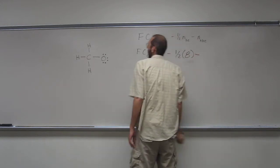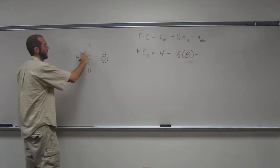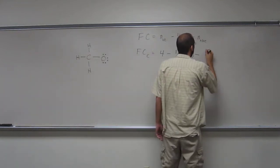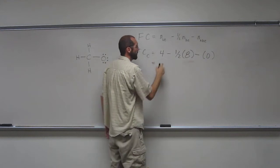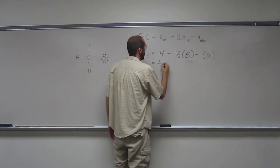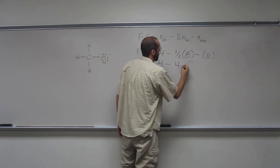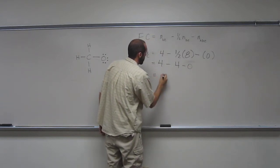Minus the number of non-bonding electrons. Well, it doesn't have any. So 4 minus 4 minus 0 is 0.